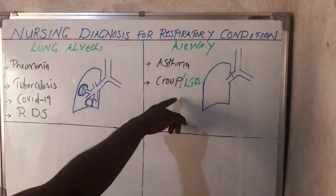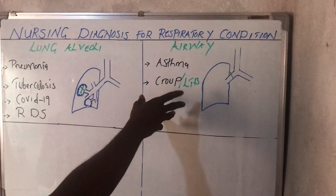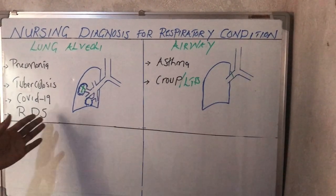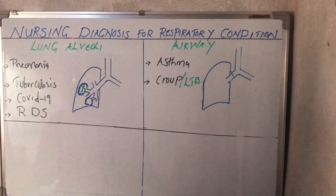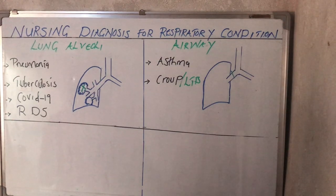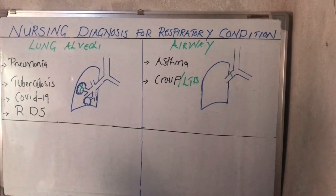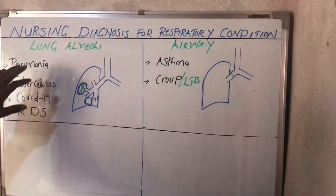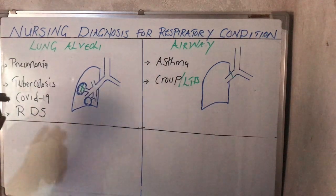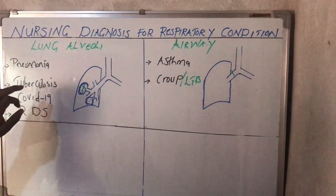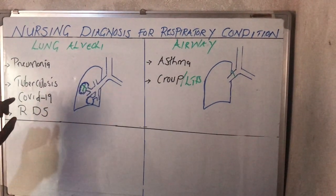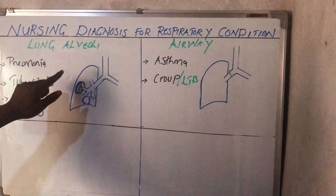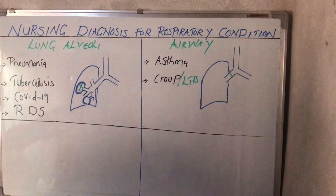Croup is more common in pediatrics, and respiratory distress syndrome is also more common in children. We'll begin by discussing the nursing diagnosis for the conditions that affect the lung alveoli.